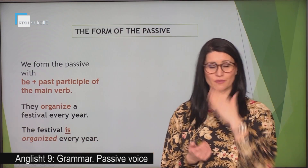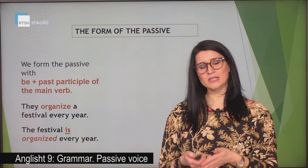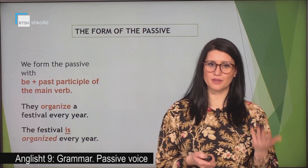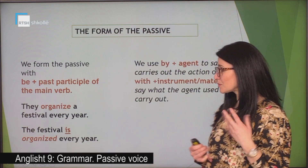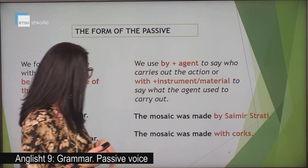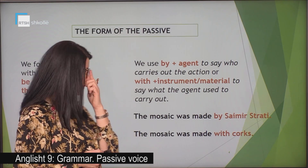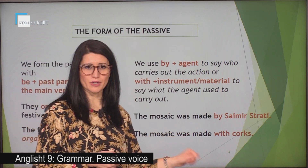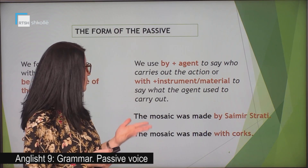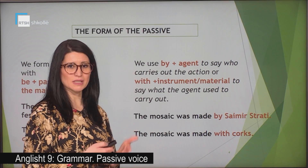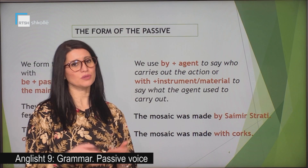What is the past participle of the verb? We have regular and irregular verbs. Regular verb forms are the verbs that you have at the end of your books. But have a look at the other sentences here. The mosaic was made by Saimir Strati. The mosaic was made with corks. We use 'by' plus an agent to say who carries out the action, or we use 'with' plus material or instruments to say what the agent used to carry out an action.